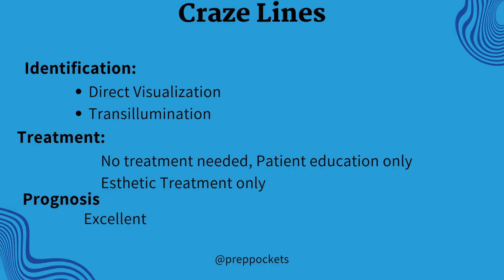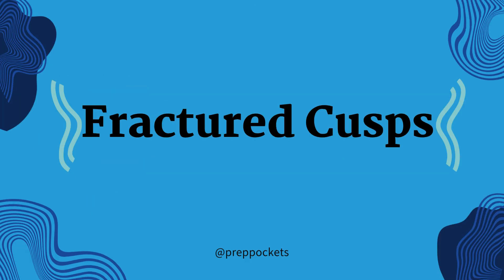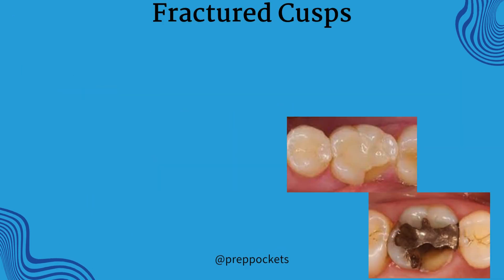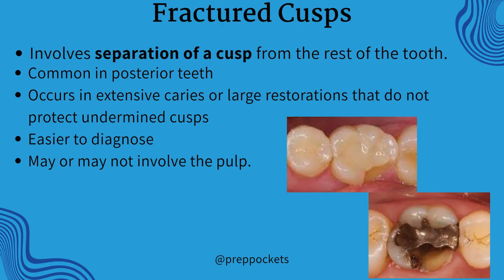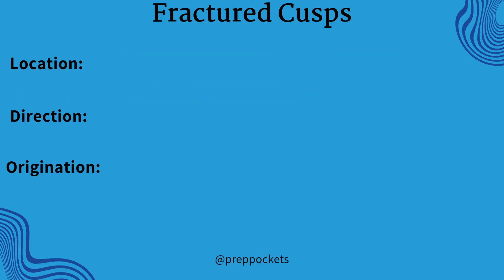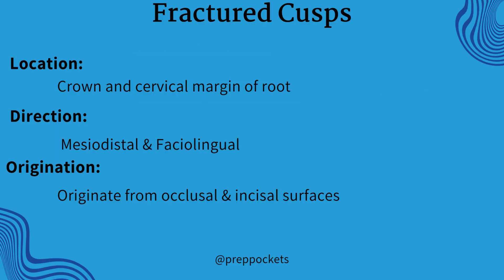Craze lines have excellent prognosis. Let's move to the next type, which is fractured cusps. Fractured cusps involve the separation of cusps from the rest of the tooth. It is most common in posterior teeth and occurs due to extensive caries and deep restorations. These are the easiest to diagnose and may or may not involve pulp. These originate from the occlusal and incisal surfaces in the mesiodistal and faciolingual directions.